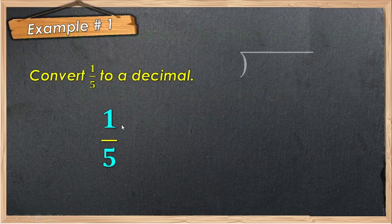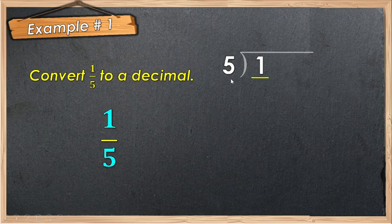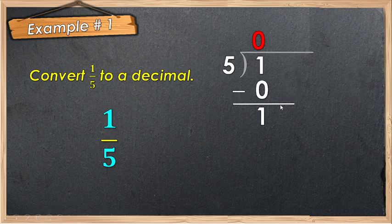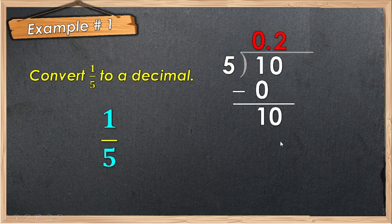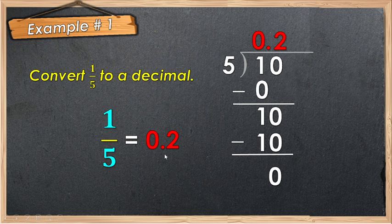Let's have some examples. We have 1/5 to convert to decimal. 1 is inside the long division bar, and 5 is outside the long division bar. We're going to divide the numerator by the denominator. 1 divided by 5, the answer is 0. Then, 0 times 5, the answer is 0. Subtract — the answer is 1. Then add 0, and place the decimal point. Bring down 0: 10 divided by 5, the answer is 2. Then 2 times 5 is 10. 10 minus 10 is 0. Therefore, the equivalent decimal of 1/5 is 0.2, or 2 tenths.